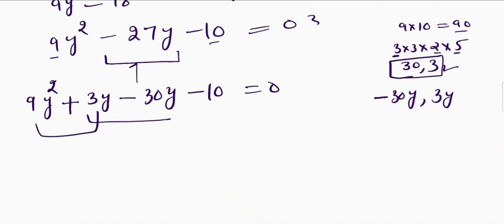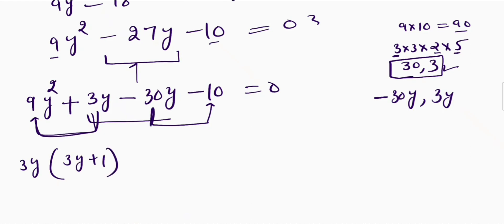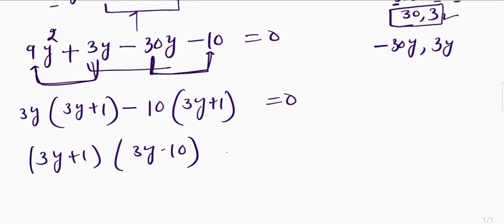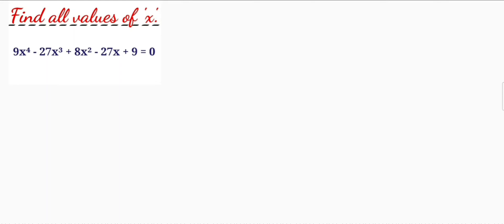I will take these two terms together and these two terms together. From the first two terms I can take 3y out and inside I will be left with 3y plus 1. From the last two terms I can take negative 10 out, and inside I will be left with 3y plus 1, which equals 0. So this becomes (3y plus 1)(3y minus 10) is equal to 0. Either 3y plus 1 equals 0, or 3y minus 10 equals 0.